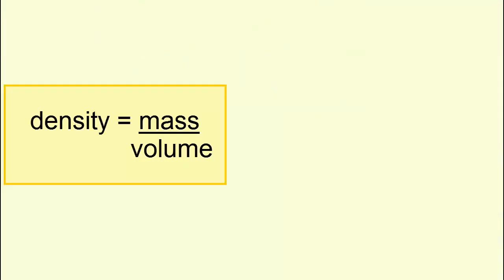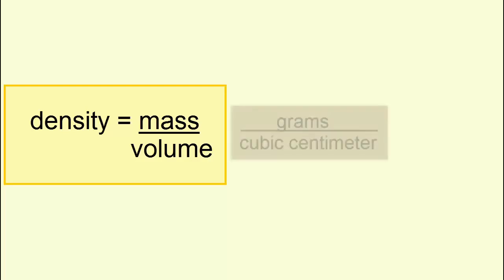Density is the ratio of an object's mass to its volume. It is not simply mass or weight. It's mass per unit of volume, grams per cubic centimeter or kilograms per liter.